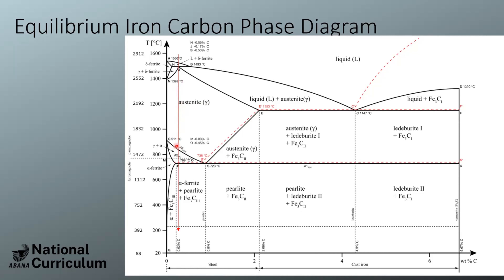Austenite is a really broad phase field — it covers a wide range of temperatures and a very broad range of carbon content. There's a high solubility of carbon in austenite, all the way up to 2% carbon. That's really helpful for achieving different properties in steels: different hardnesses, toughnesses, and strengths. As we alter the composition of our steels and start adding other elements, we can actually change the size of this austenite phase field, which changes what kind of quench medium we might use and the overall properties we can achieve.